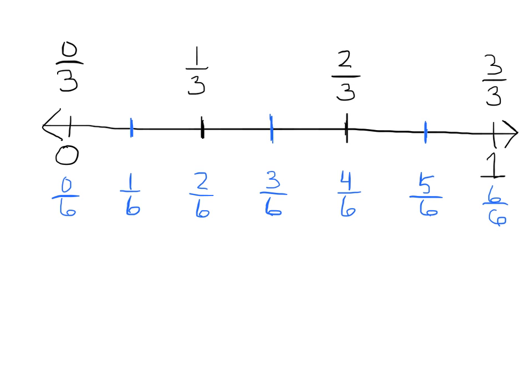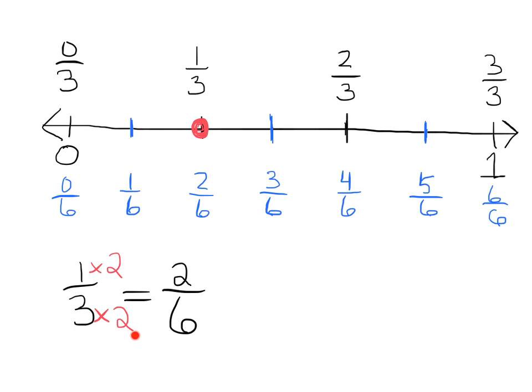Same thing, only now we've got sixths. We could see a relationship in equivalents. Right here, we can see that one-third is equivalent to two-sixths, and we can see that the relationship is both numbers are multiplied by two — both the numerator and the denominator are multiplied by two, and that gives us two-sixths.